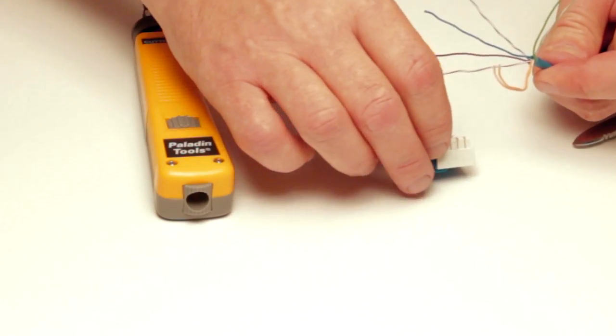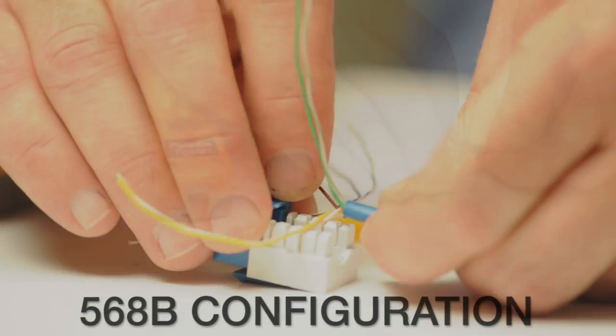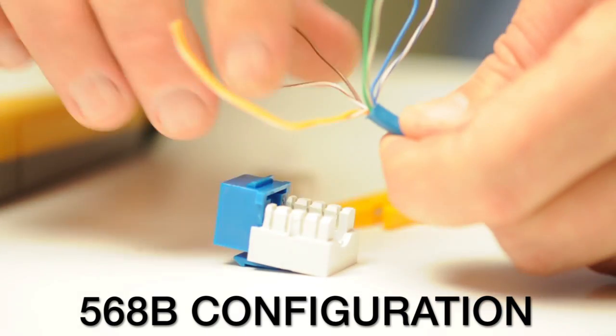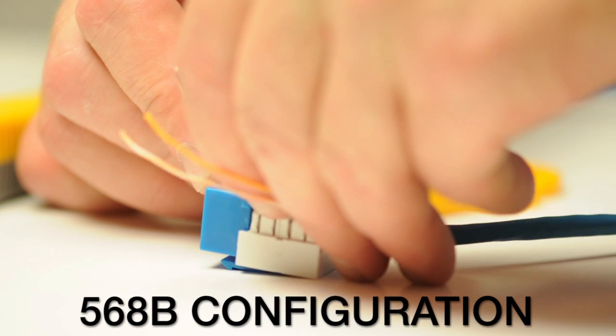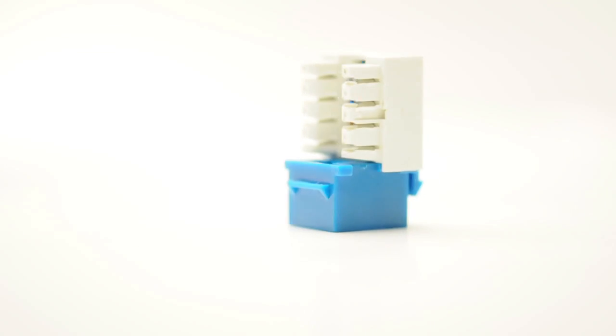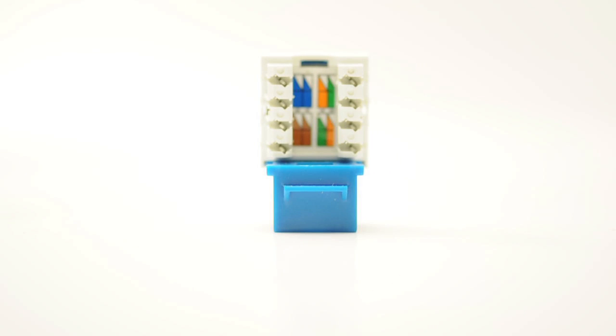Once I have my pairs fanned out, I can lay them onto the IDC connector on the back of the jack in the appropriate color code. The color code is printed on the jack for reference. The color code shows the order of conductors.